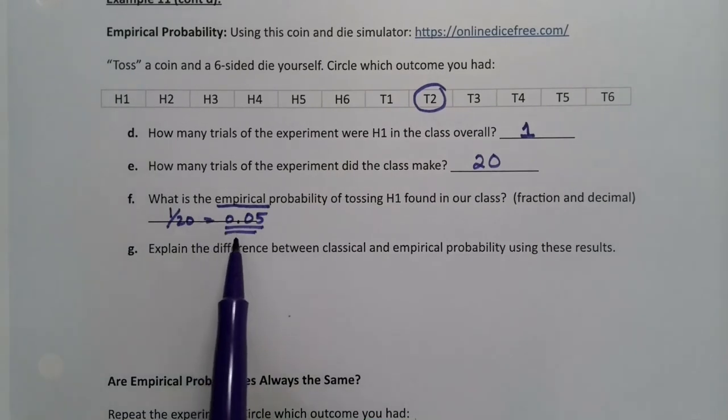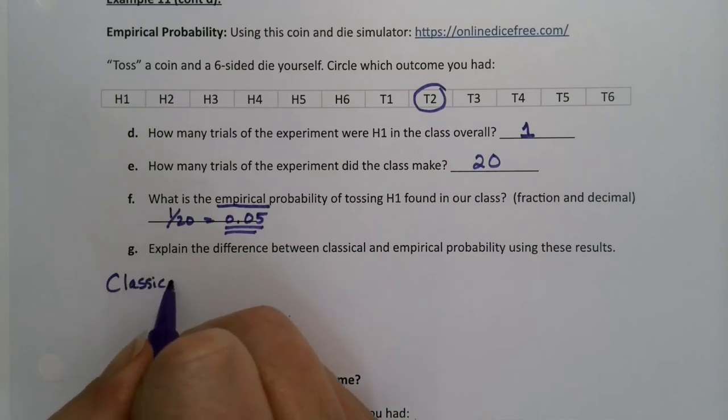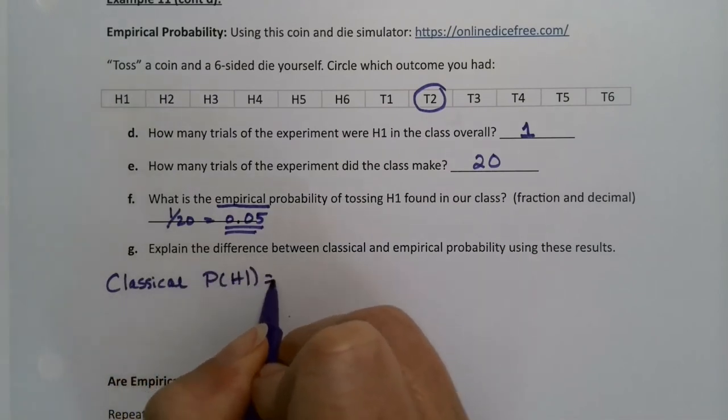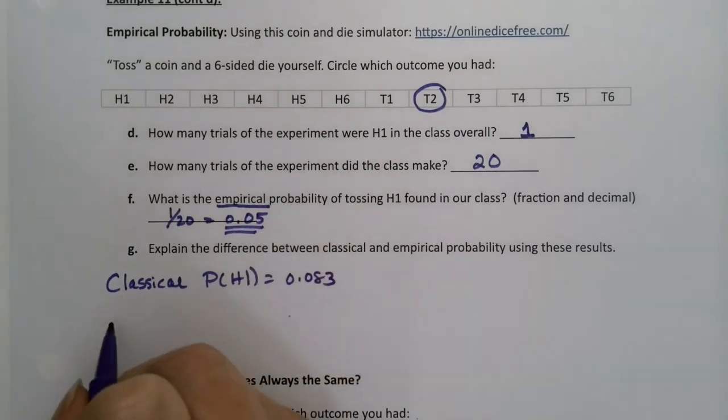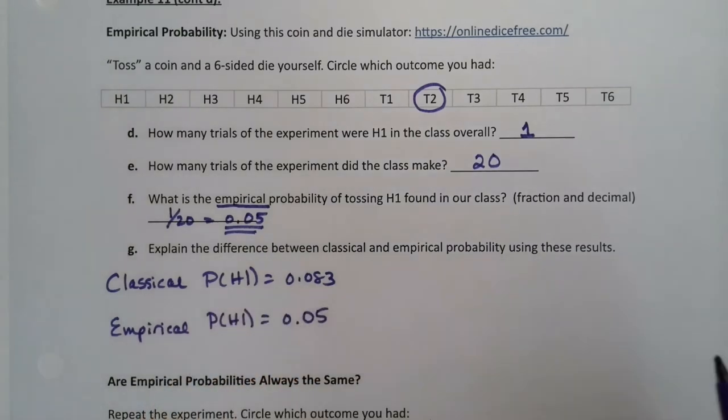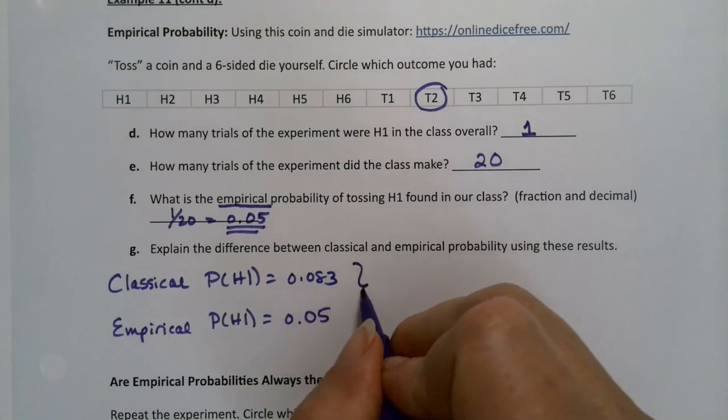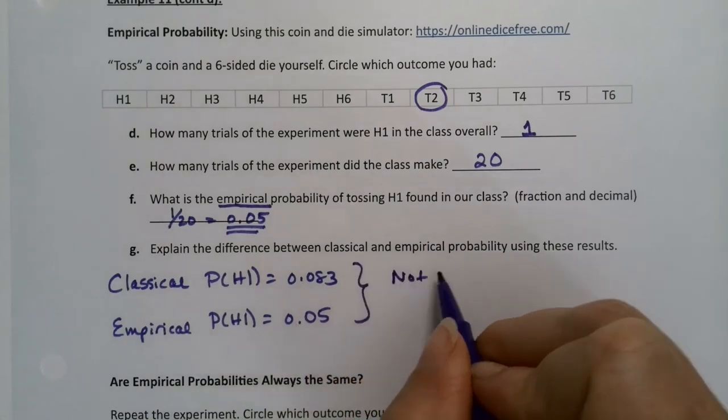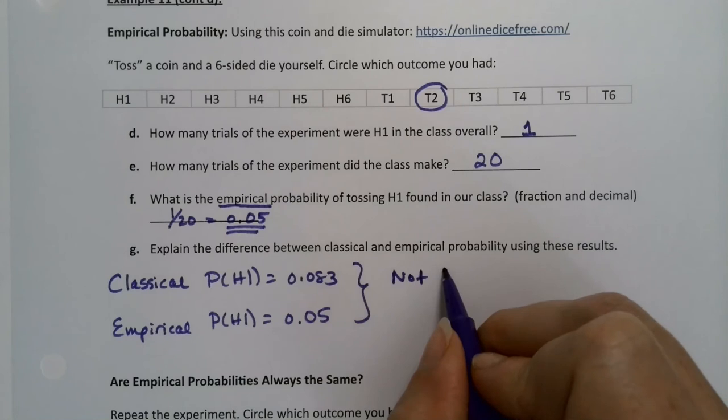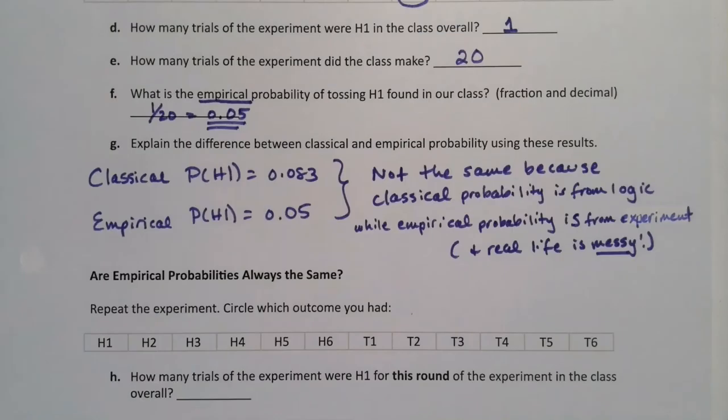So in one class that I did this with, I had one student have an H1 out of the 20 students that were in class that day. So 1 out of 20. So the empirical probability, because it's empirical because it's from data, would be 1 out of 20, which is 0.05. So that's both the fraction and the decimal. Easy enough. Now, this is not the same as the classical probability. So the classical probability, remember, was 0.083.